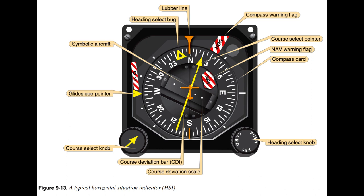The combination of navigation information from VOR/localizer (LOC) with aircraft heading information provides a visual picture of the aircraft's location and direction. This decreases pilot workload, especially with tasks such as course intercepts, flying a back course approach, or holding pattern entry.